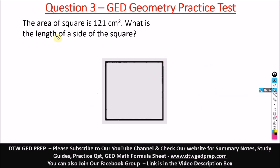In question three of our GED geometric practice, it says the area of a square is 121 cm². What is the length of a side of the square? From our formula sheets, the area formula for a square is s². It has told us that area is 121, so we need to look for the length of one side, s.